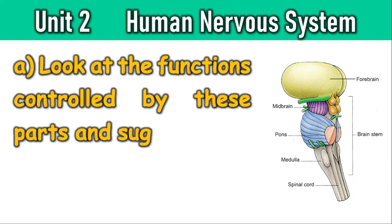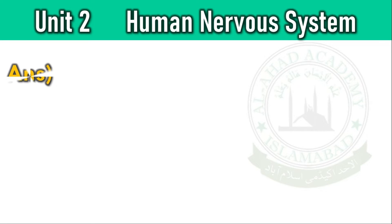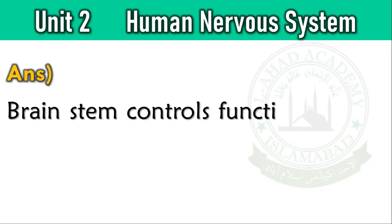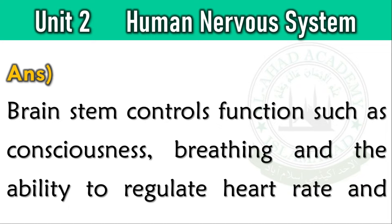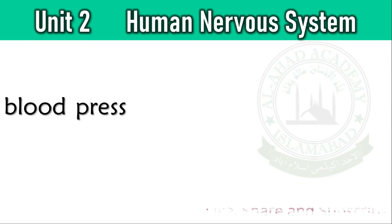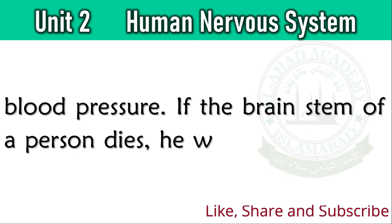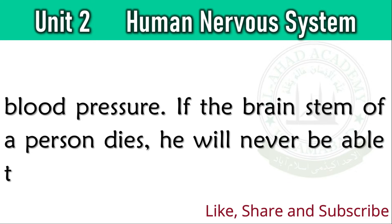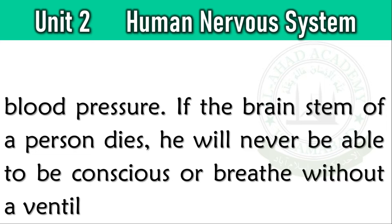Look at the functions controlled by these parts and suggest what will happen if the brainstem dies. The brainstem controls functions such as consciousness, breathing, and the ability to regulate heart rate and blood pressure. If the brainstem of a person dies, he will never be able to be conscious or breathe without a ventilator.